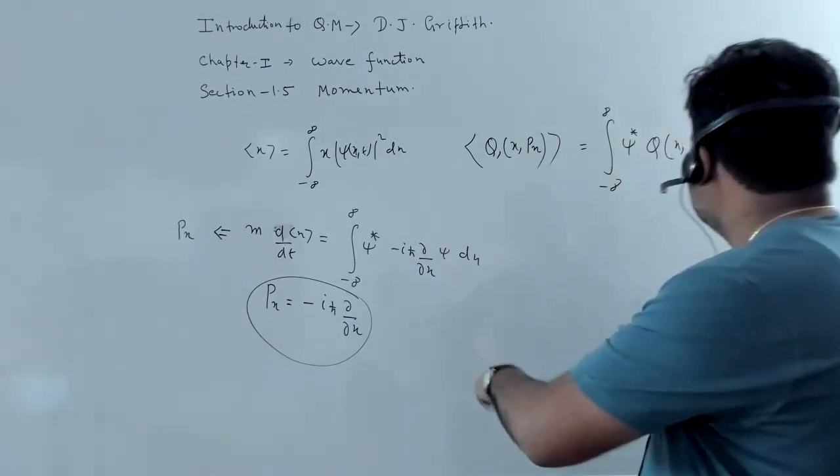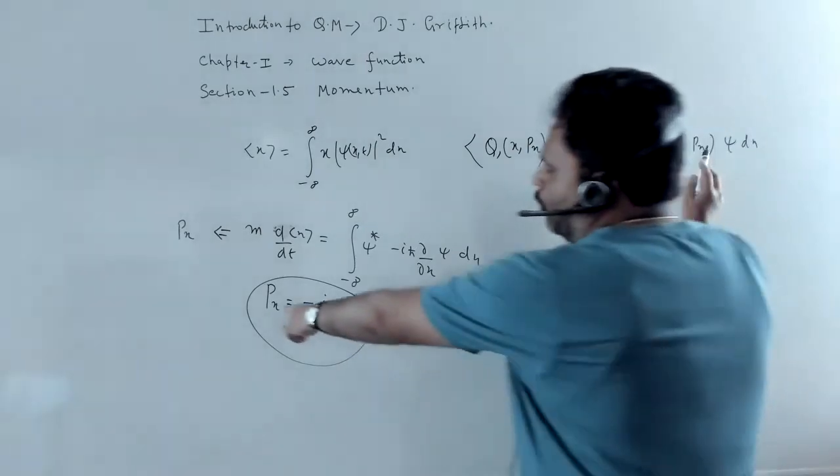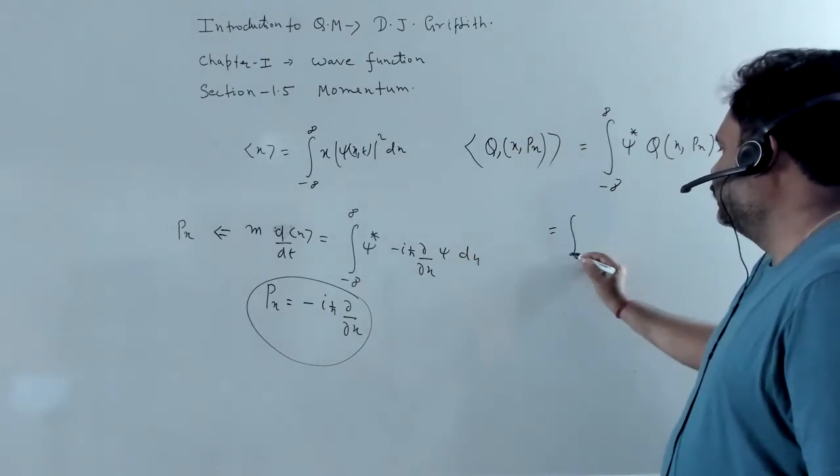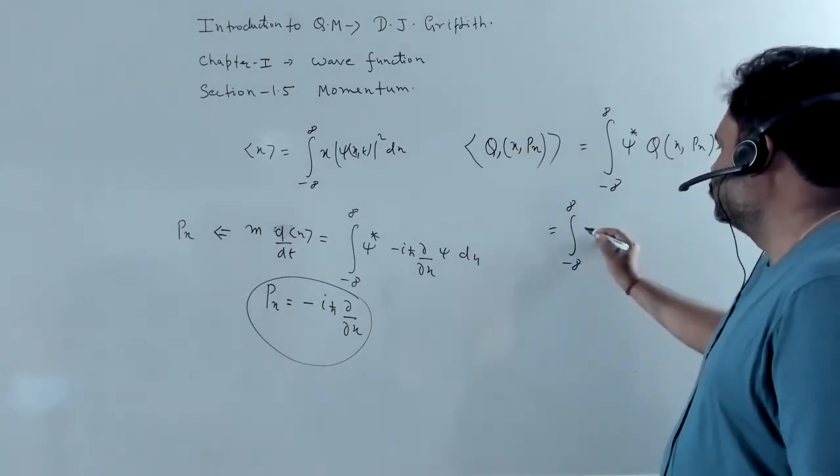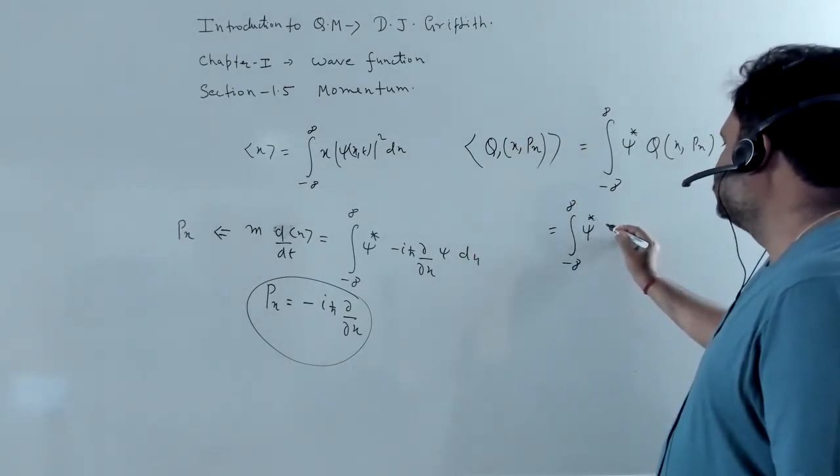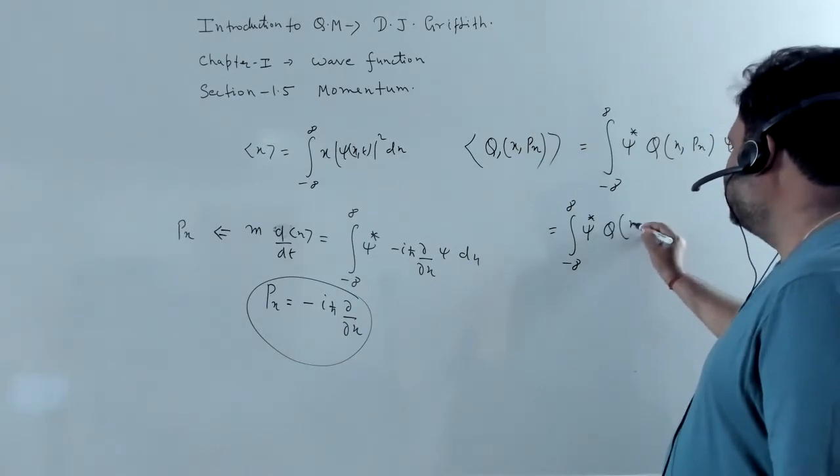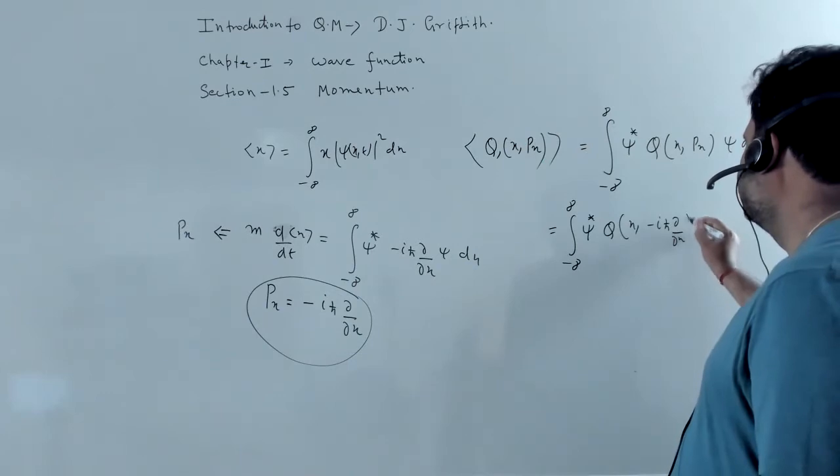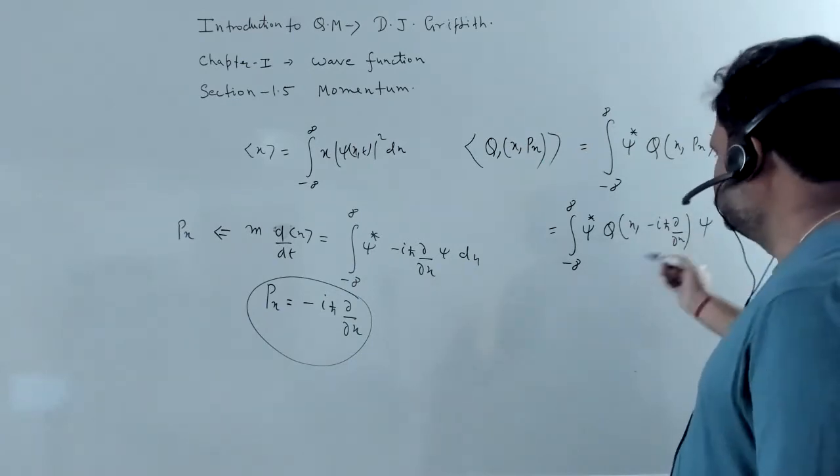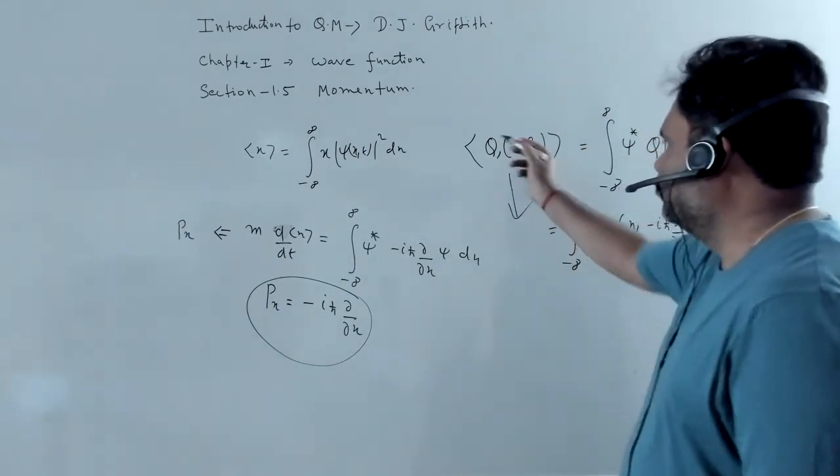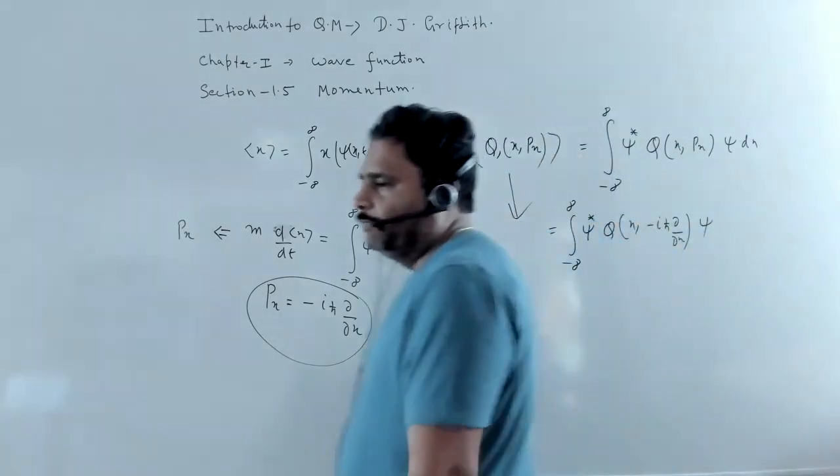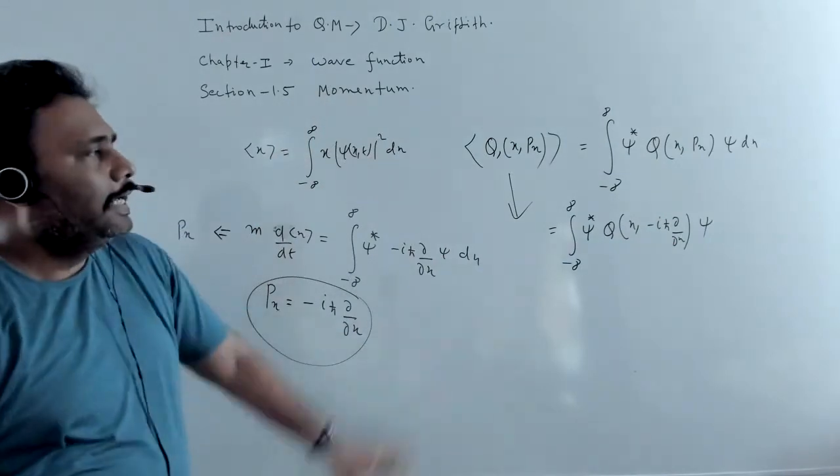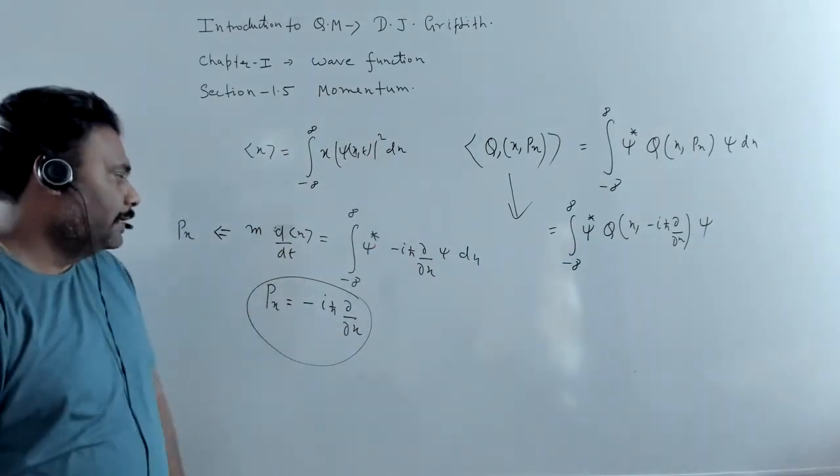But what we have to do, we have to just change this momentum operator in a position variable. So we can write this thing as minus infinity to plus infinity, psi star q x minus ih bar del upon del x psi. So this is the expectation value of the dynamical variable q, which can be function of position and momentum. So in this chapter, we have basically this concept.